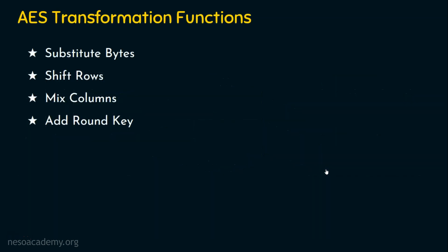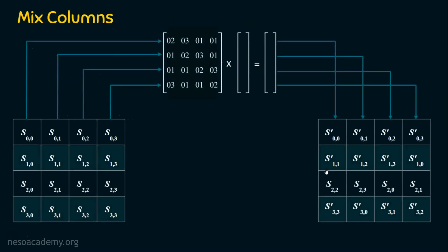We are done with sub bytes and shift rows. The third transformation is mix columns. Before entering this function, we have the state array as S[0][0] to S[3][3]. What happens after transformation is simply a matrix multiplication: a predefined 4×4 matrix is multiplied with the 4×4 state array, and the result — also 4×4 — replaces all S values with S dash values.